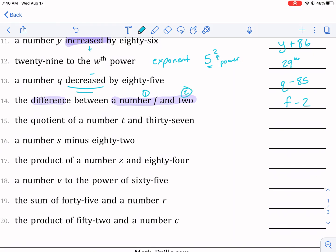Quotient of a number—same thing with quotient. I don't know if I mentioned this earlier, but if you have quotient of a number t and 37, this one's listed first, that one goes on the top. This one's listed second, that one goes on the bottom. A number s minus 82—this one just says what to do: s minus 82.